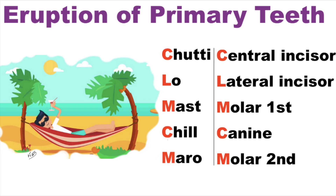Now follow the red letters: C for central incisor, L for lateral incisor, first M for first molar, C for canine, and then last M for second molar. But we have to remember both maxillary and mandibular teeth eruption sequence.